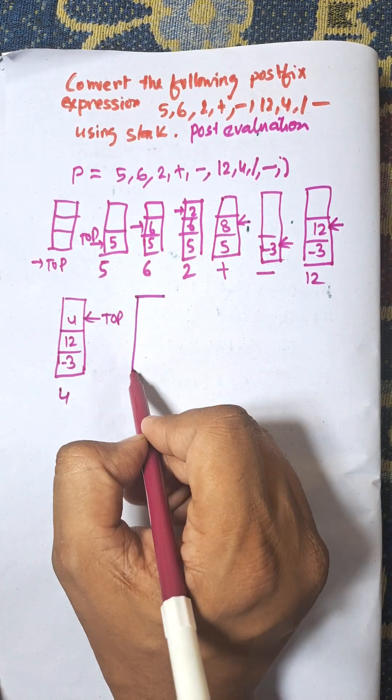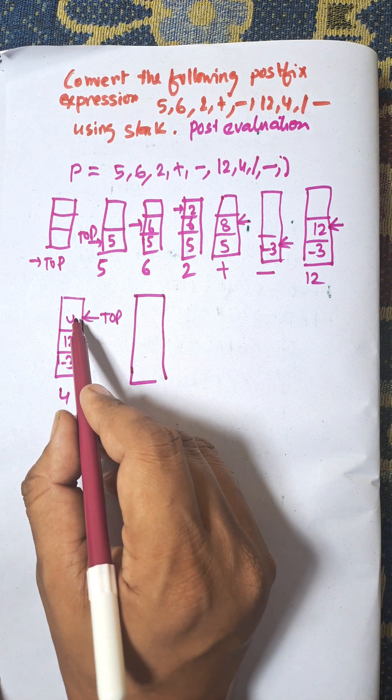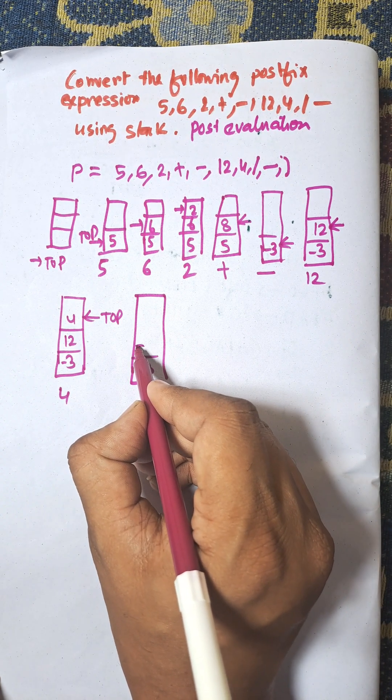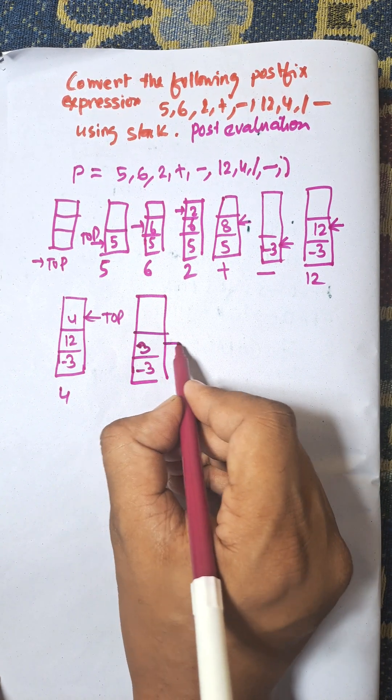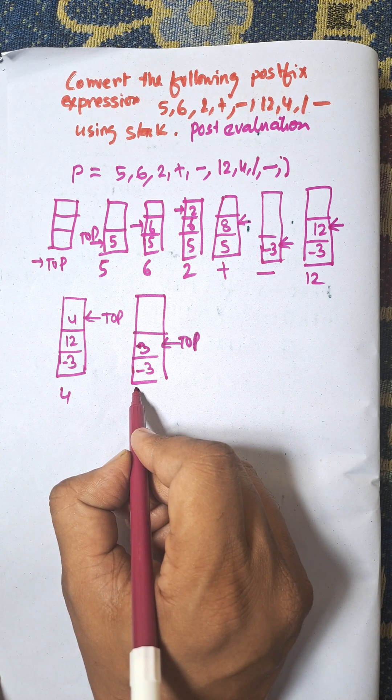Next, we need to perform the division operation, that is, 12 by 4, that is equal to 3, minus 3, and minus 3, that is equal to 3, and top is there. This is for division operation.